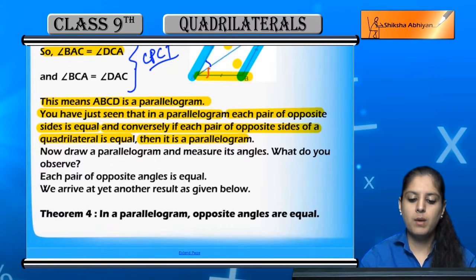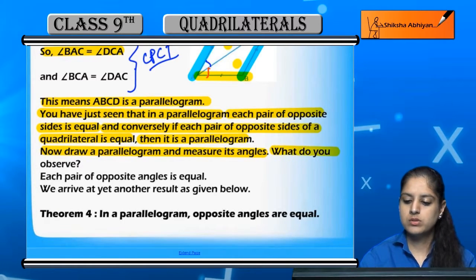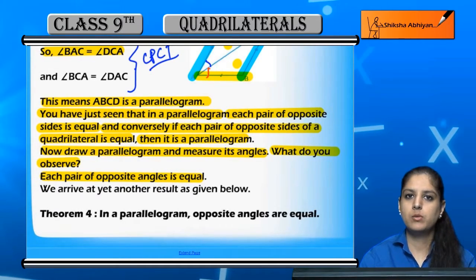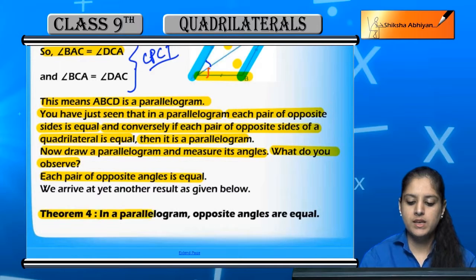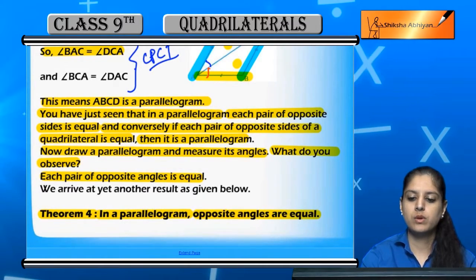Now, if you draw a parallelogram and measure the angles, what do you observe? You will find that every pair of opposite angles is equal in a parallelogram. So this is another result — Theorem 4: In a parallelogram, the opposite angles are equal.